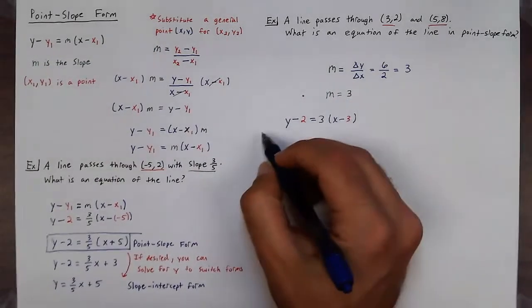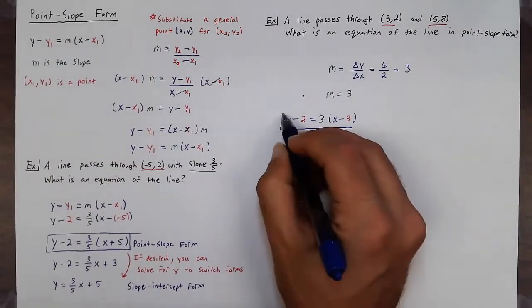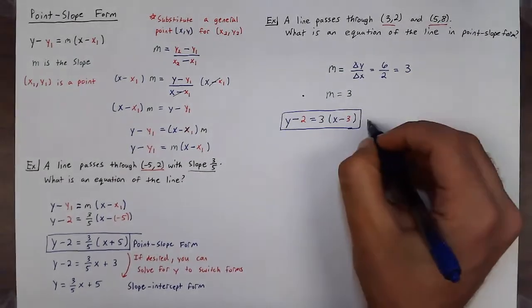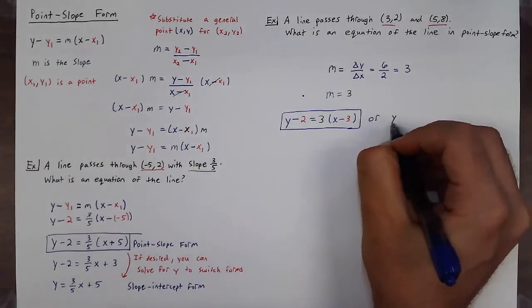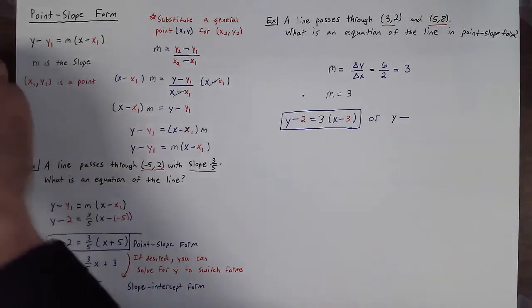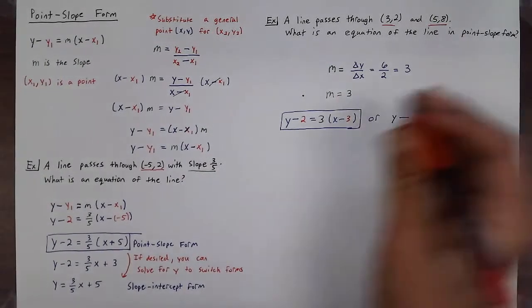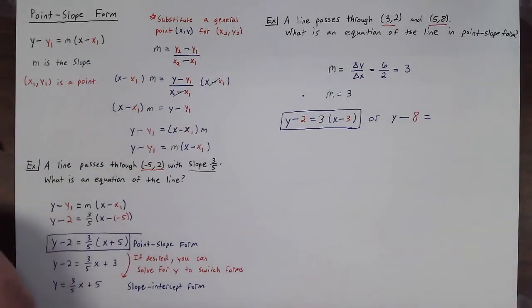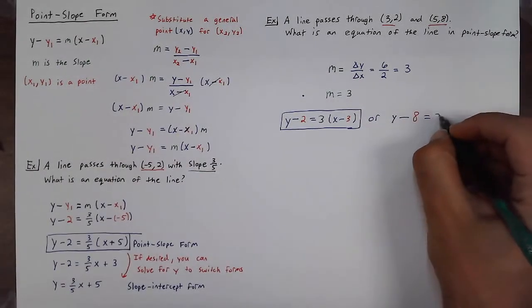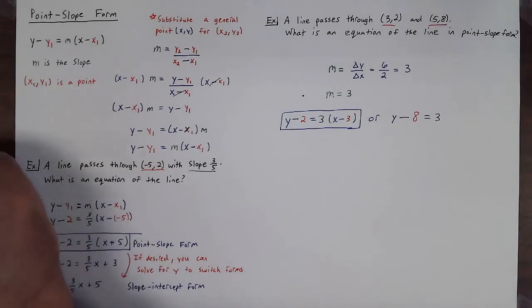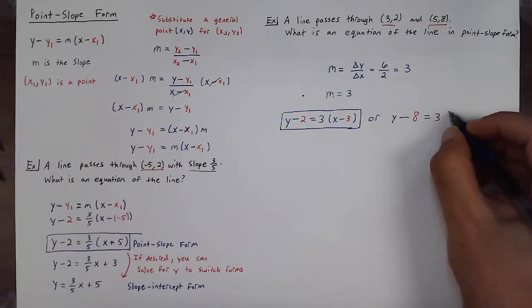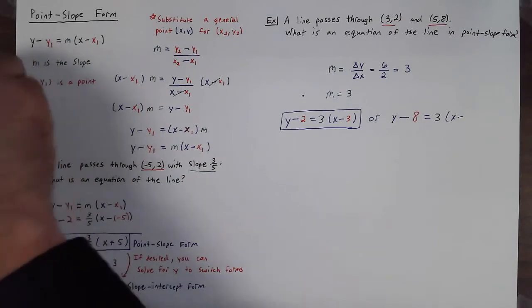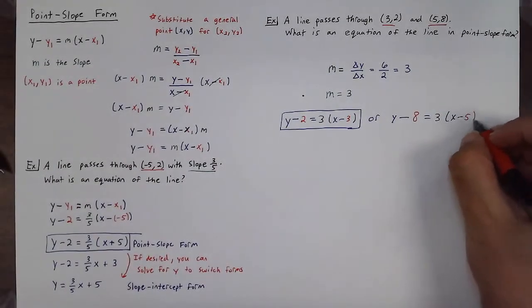Or I could write it as y minus eight is equal to three times x minus five. These are both correct ways to write the answer.